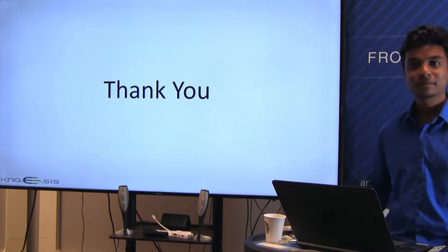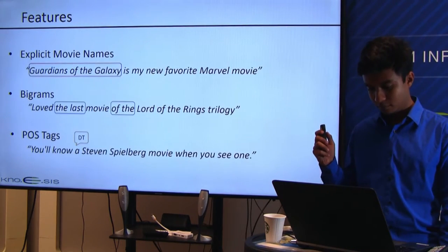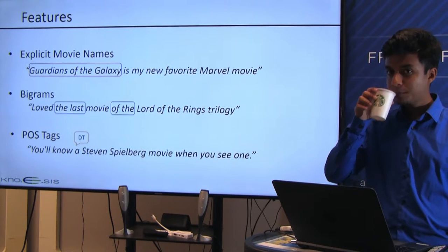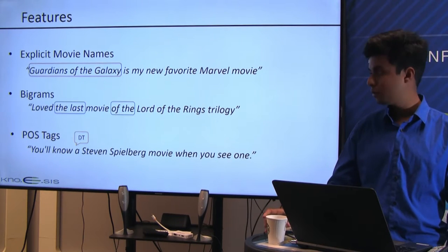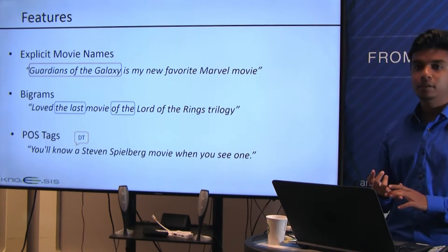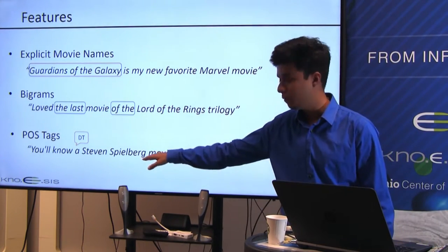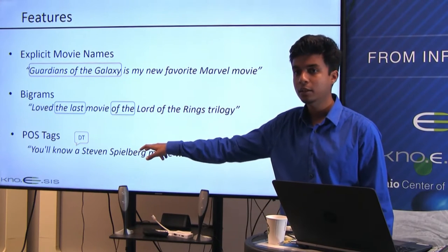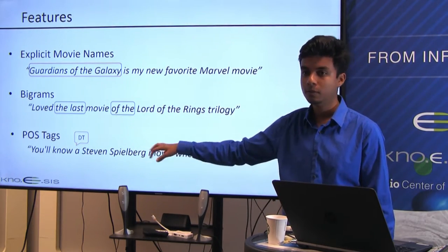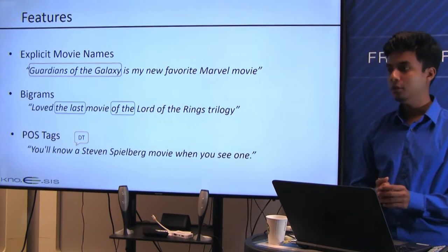A question about preprocessing: we apply regular preprocessing — removing emoticons, punctuation, and normalizing numbers. For POS tags specifically, if a term before the semantic cue is an entity like Steven Spielberg, we skip its POS tag and use the term before the entity instead. We remove entity mentions in the case of POS tags. We do not perform stop-word removal.